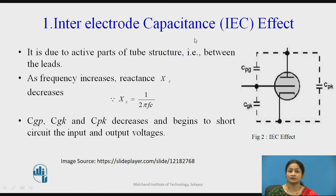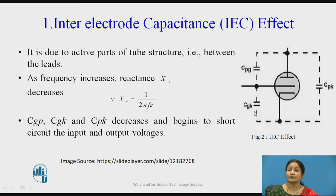The first is the inter-electrode capacitance (IEC) effect. In the equivalent circuit of the vacuum tube, you can see the cathode and anode plates connected through capacitors. These capacitors are represented as C_kg (between the grid and cathode), C_pk (between the plate and cathode), and C_pg (between the grid and the plate).